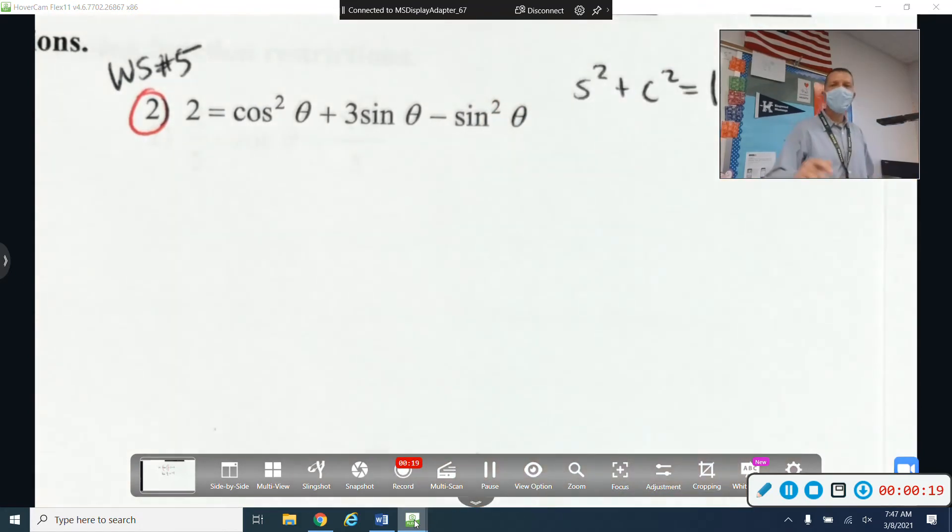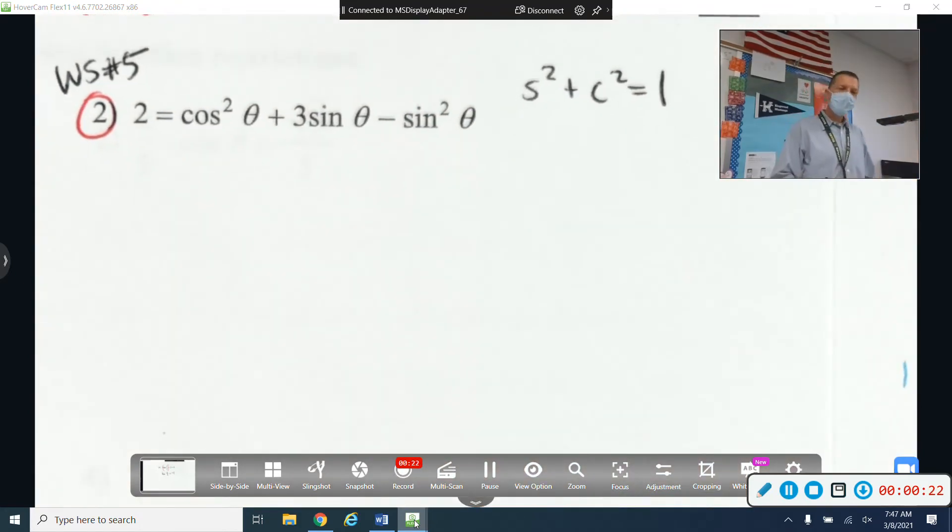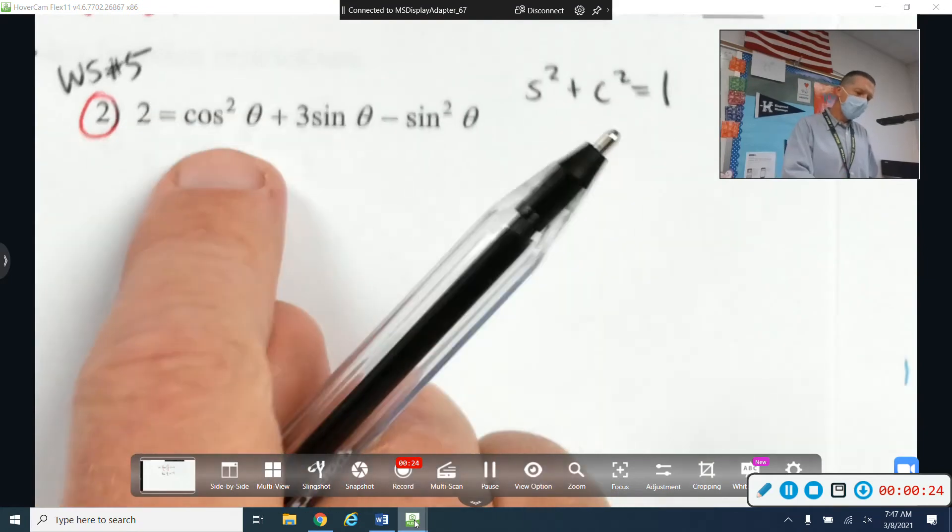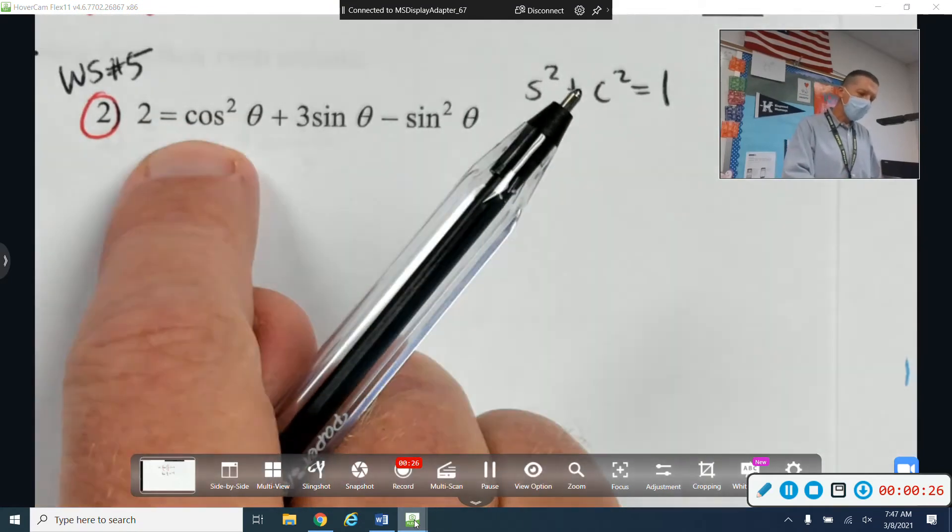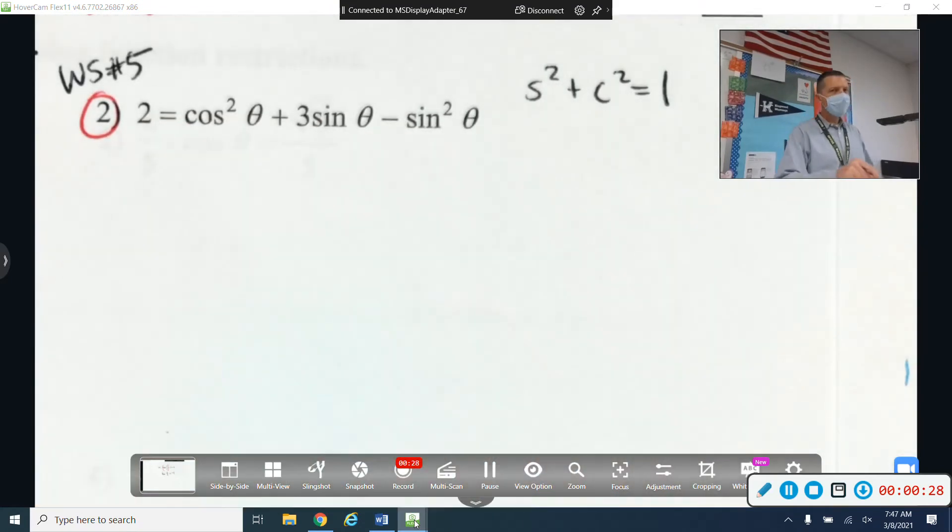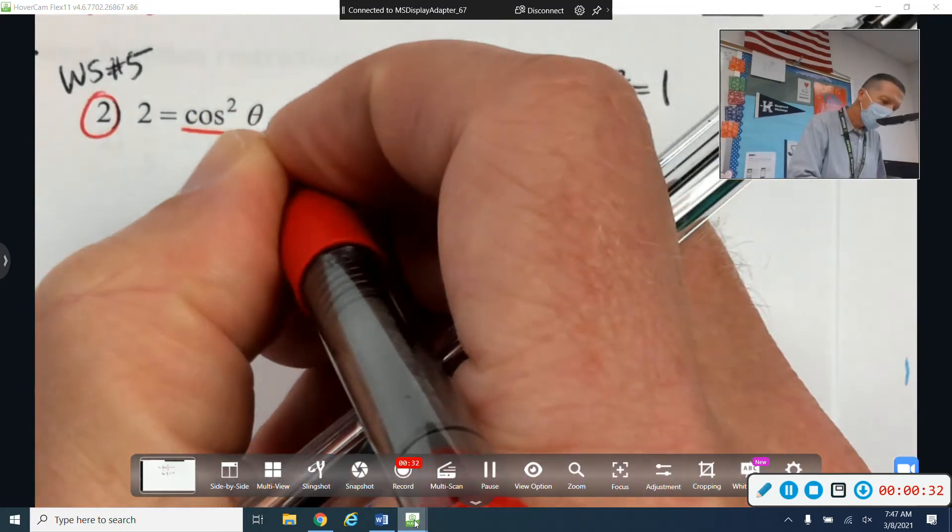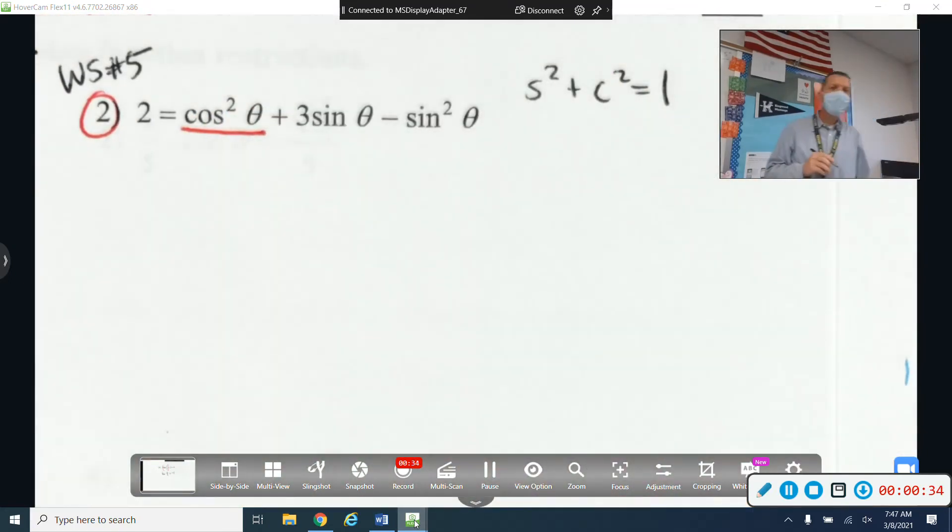Sine squared plus cosine squared is one. So who do I want to replace? Do I want to replace cosine squared or sine squared? Why do I want to replace cosine squared? Because everything else is sine. So if I get rid of the cosine squared and put something with sines in there, then everything will be in terms of sines.